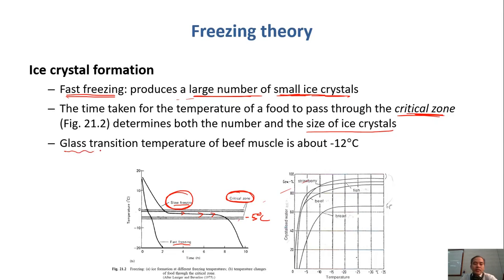We have another concept here, we call it glass transition. Glass transition temperature of beef muscle is about minus 12 degrees Celsius. So when you do fast freezing and you lower to this range of temperature, minus 12 here, you have glass for some reason. So this is similar to ice, but it's not actually ice. They call it glass.